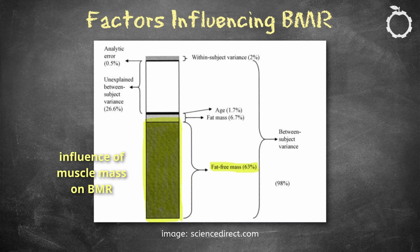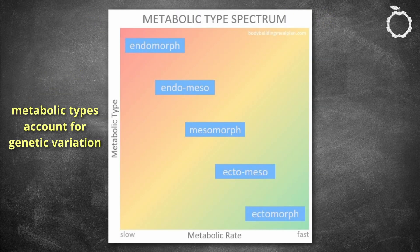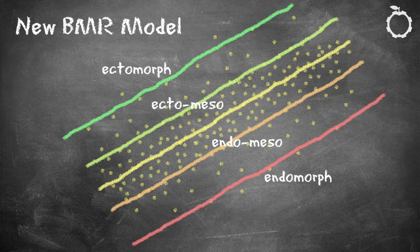However, studies show that differences in lean mass can't explain 27% of BMR variation. That means the remaining deviation must be due to other genetic factors. In another video, I defined metabolic types as a spectrum from slow to fast metabolism. Applying this concept to BMR calculations allows me to expand the model to a broader range of people.